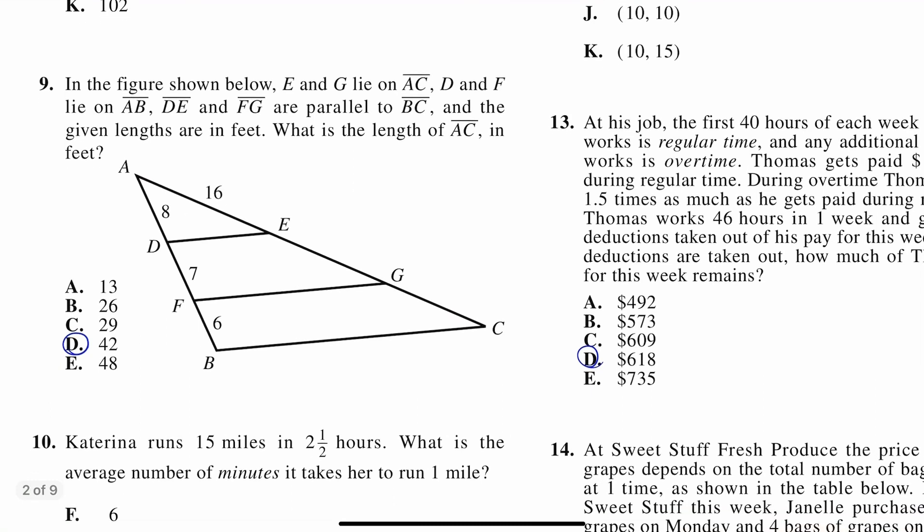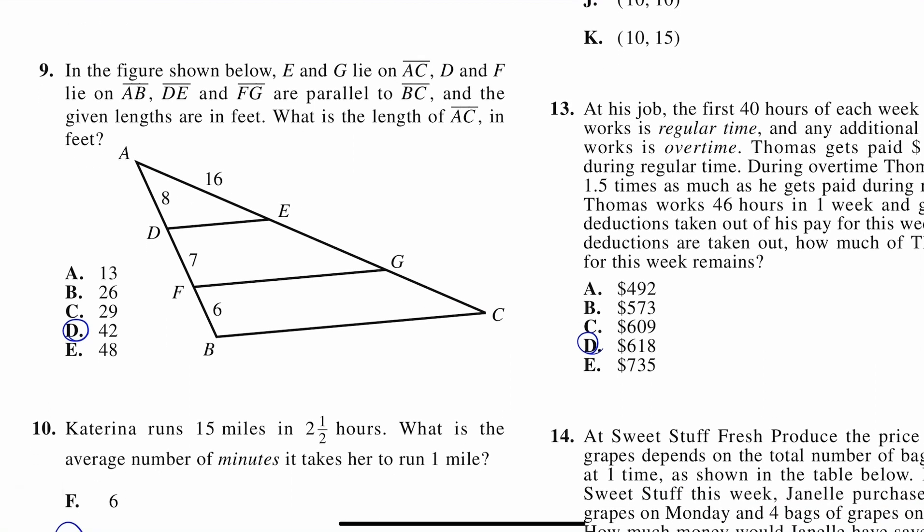Number 9. In the figure shown below, E and G lie on AC, D and F lie on AB, DE and FG are parallel to BC, and the given lengths are in feet. What is the length of AC in feet?